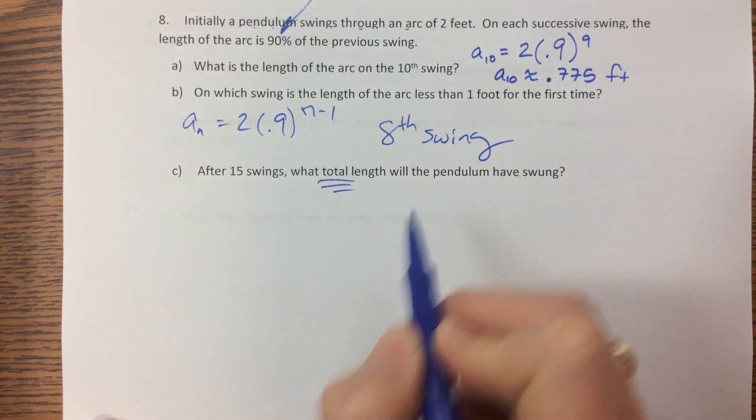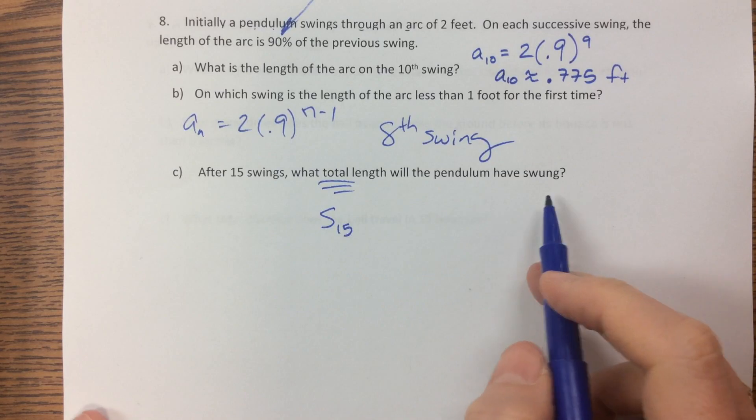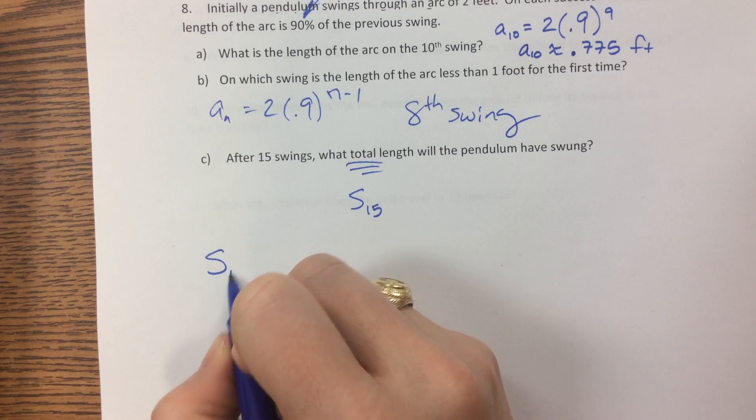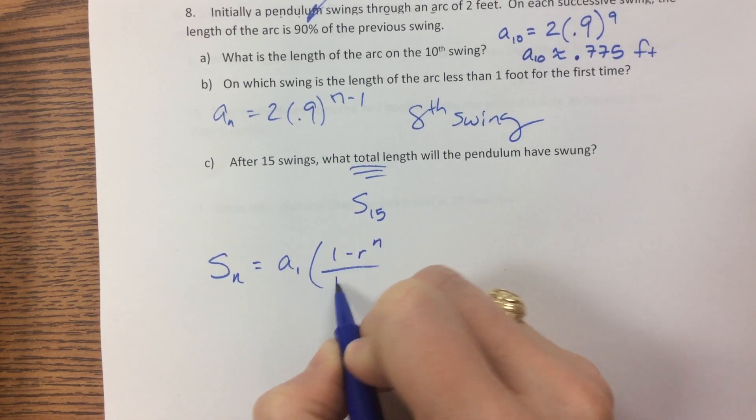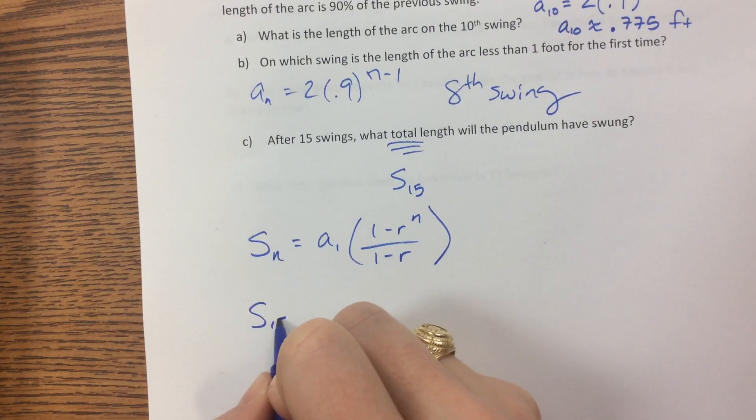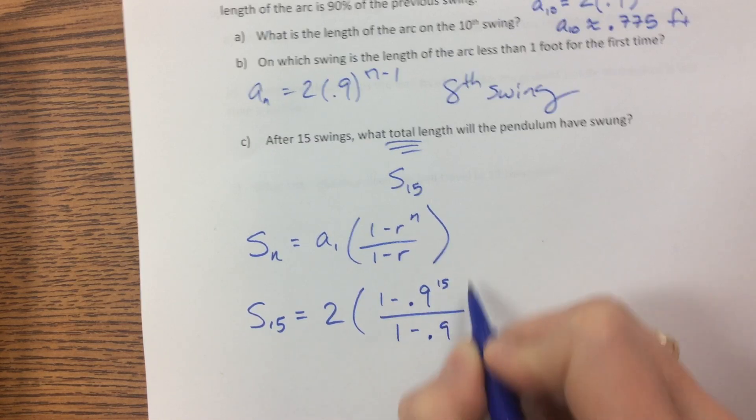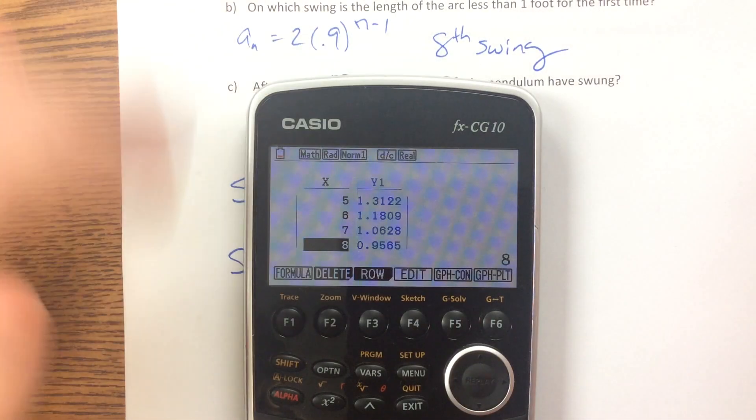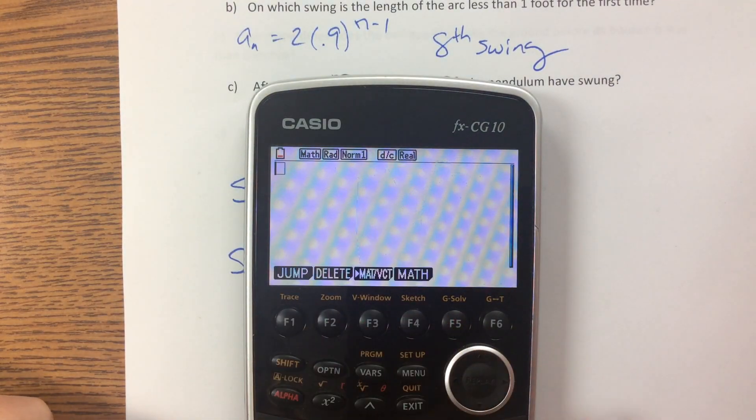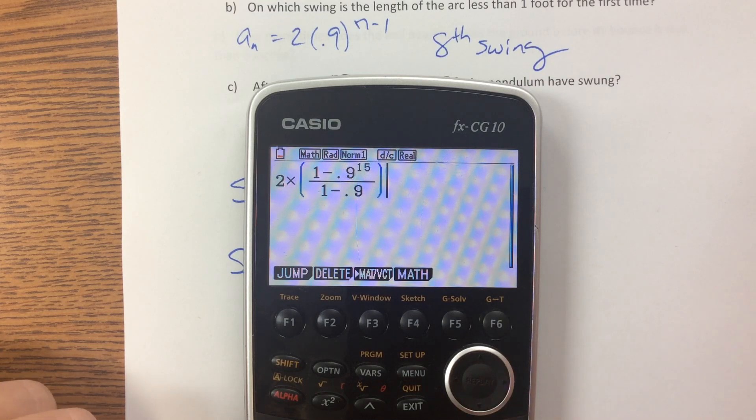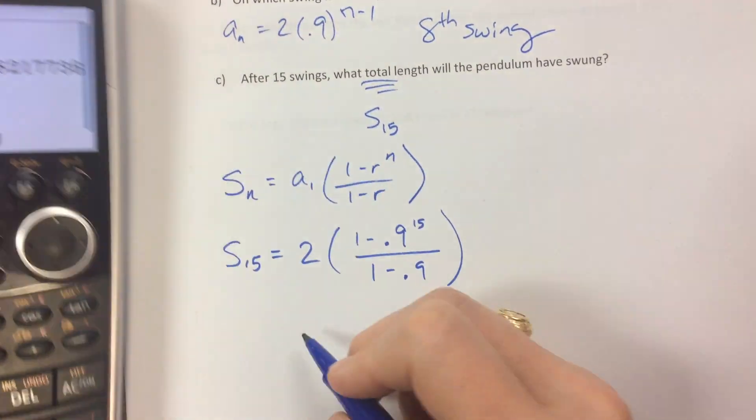After 15 swings, what total length? As soon as you see total, we're trying to find s sub 15. Will the pendulum have swung? So the sum of a geometric series is a sub 1 times 1 minus r to the n over 1 minus r. I want the 15. The first term was 2 minus 0.9 to the 15 over 1 minus 0.9.